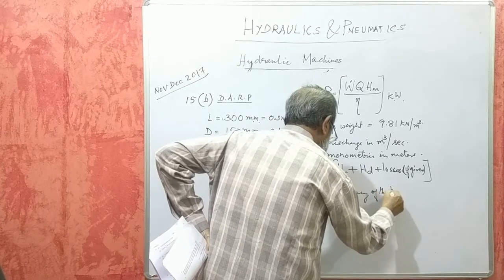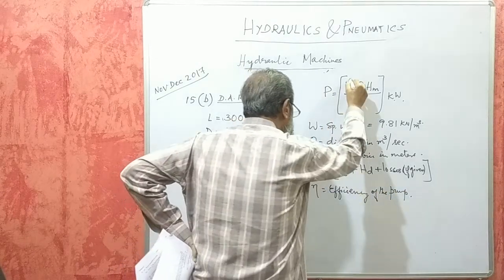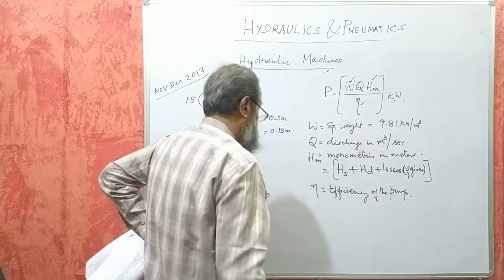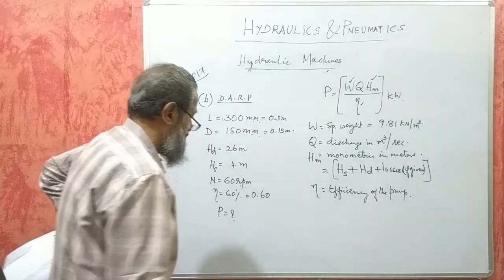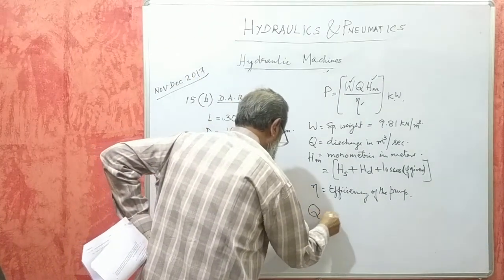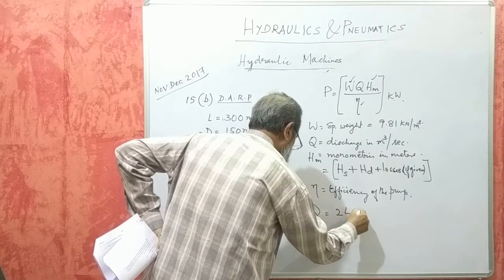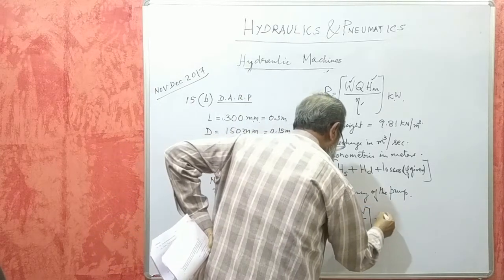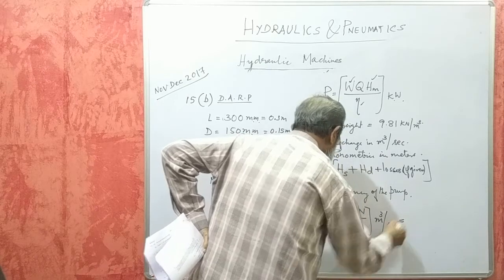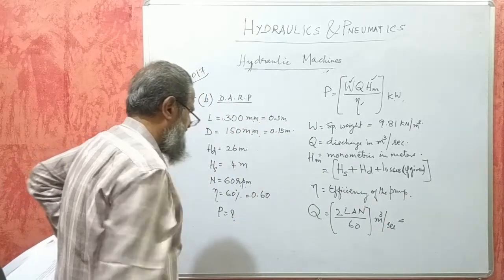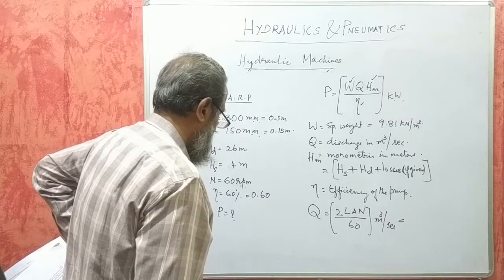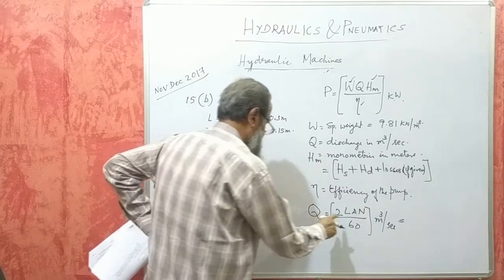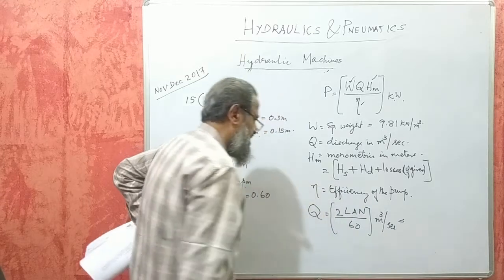Now we know W, we know HM (that is HS plus HD), and efficiency is known. We want P, so before we get P we have to get Q. Q will be 2LAN/60 cubic meters per second, because it is a double acting reciprocating pump. If it were a single acting reciprocating pump, we would not have the factor of 2 — it would be LAN/60.